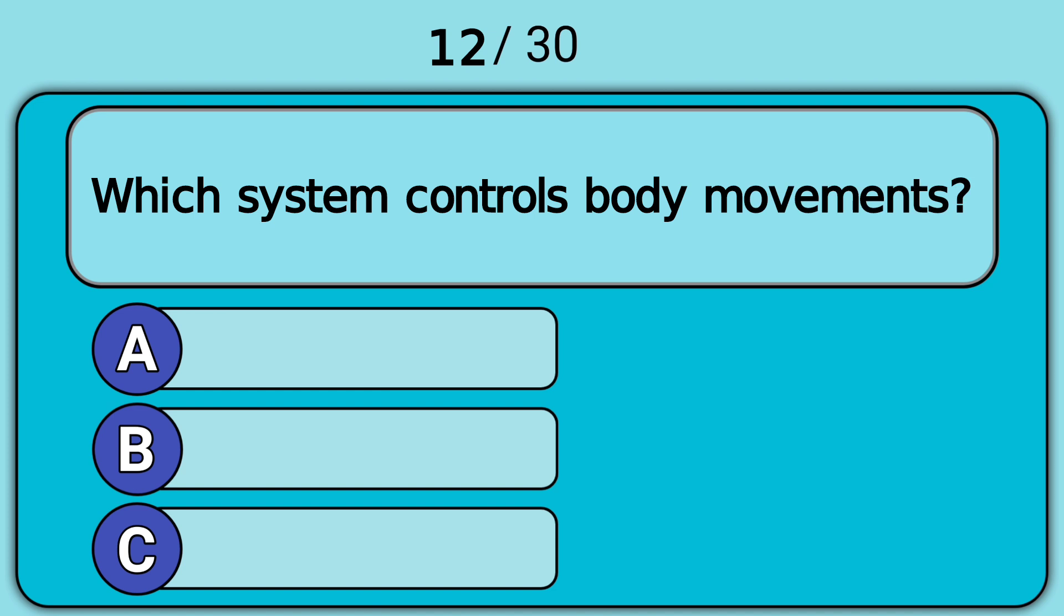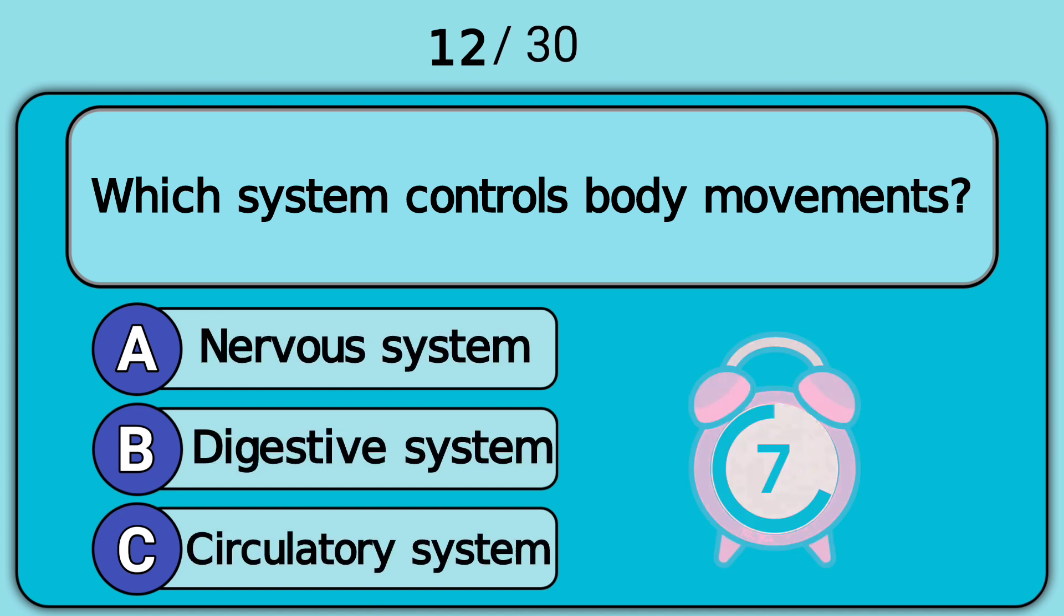Which system controls body movements? Answer A. Nervous system.